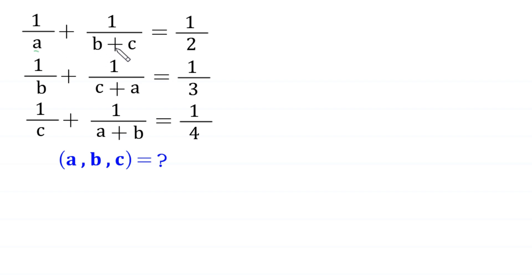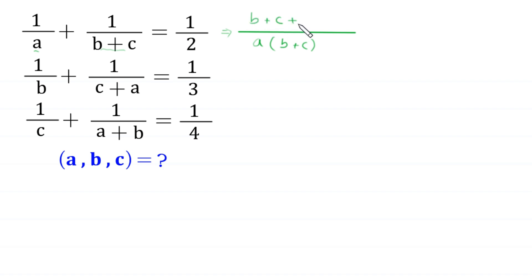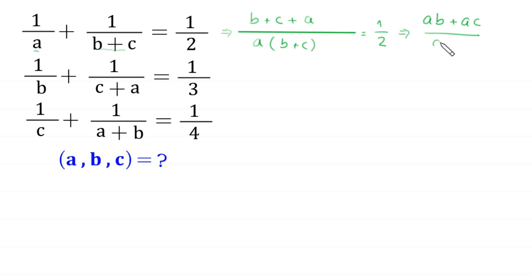From the first equation, we take the LCM of the denominator a and the denominator b+c. The LCM of a and (b+c) is a(b+c). This LCM divided by a gives (b+c), and divided by (b+c) gives a. So (b+c)·1 + a·1 = 1/2. Taking the reciprocal on both sides: (ab + ac) / (a+b+c) = 2. Let us call this Equation 1.